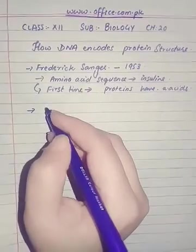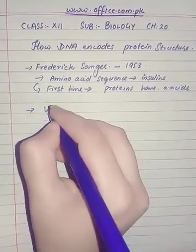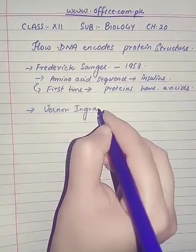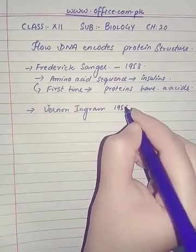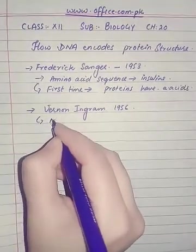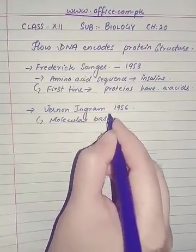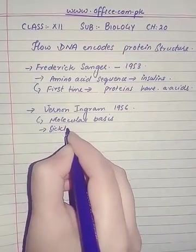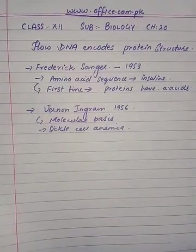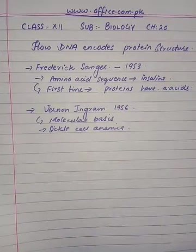Next, following the work of Frederick Sanger, there was another scientist — Vernon Ingram. The year was 1956. He discovered the molecular basis of sickle cell anemia, which is a protein defect and a Mendelian disorder.